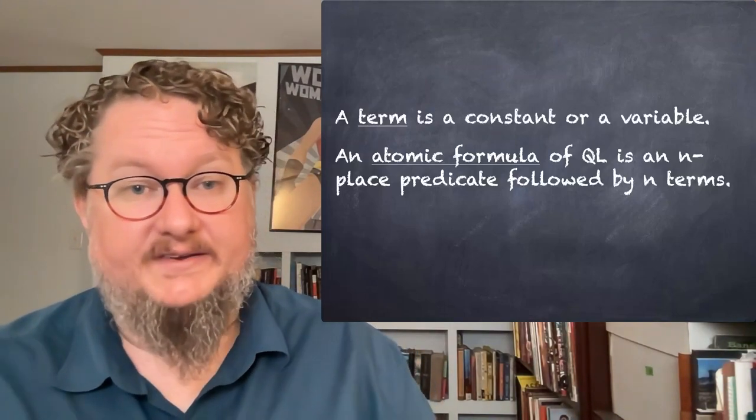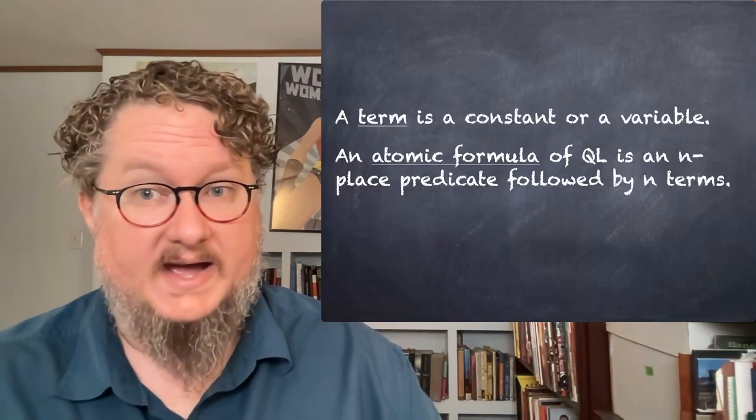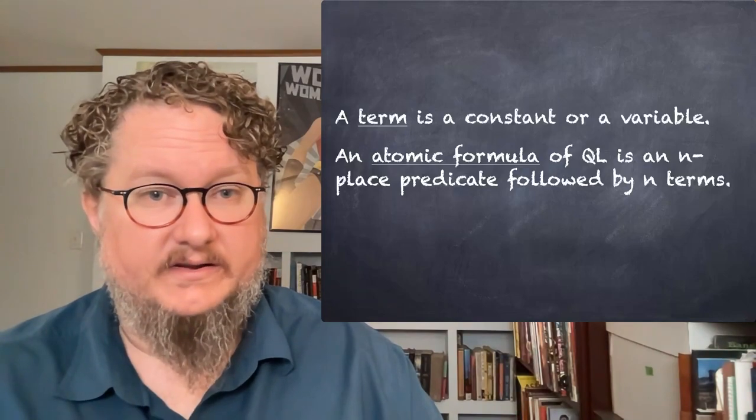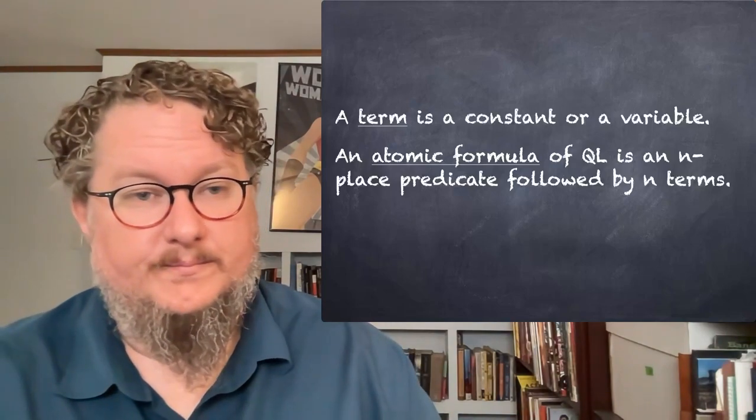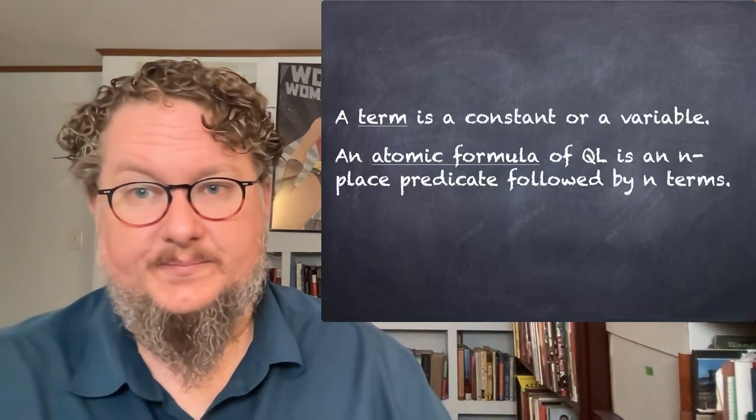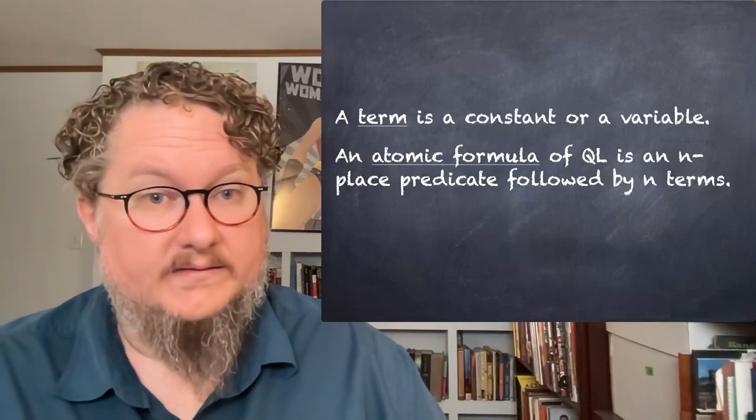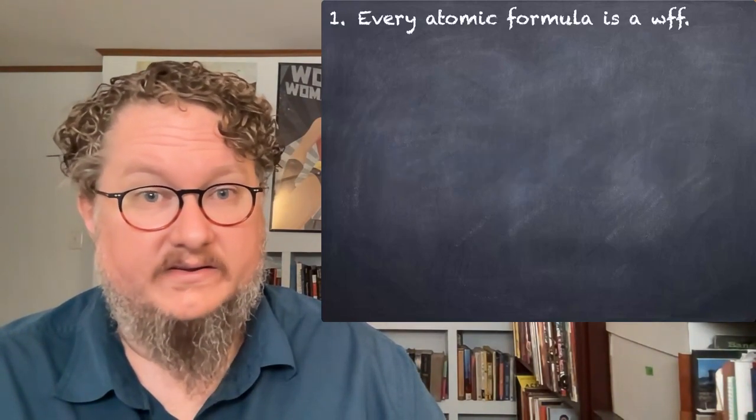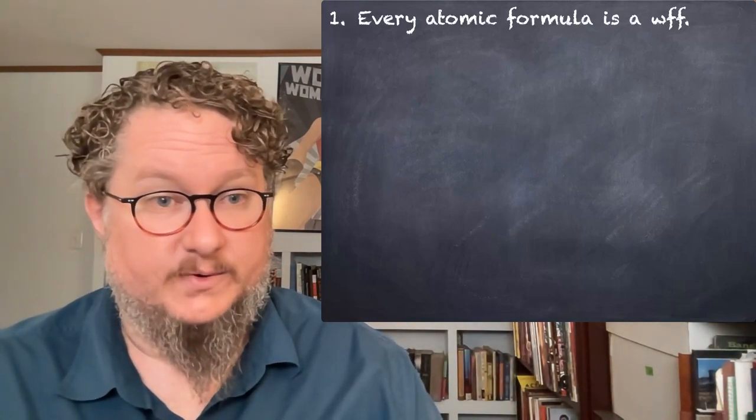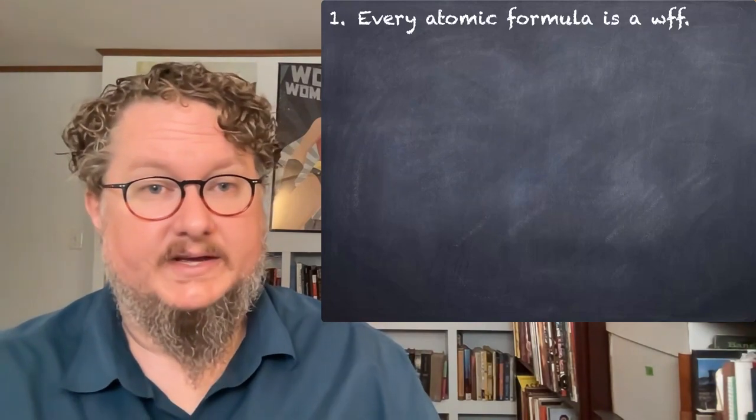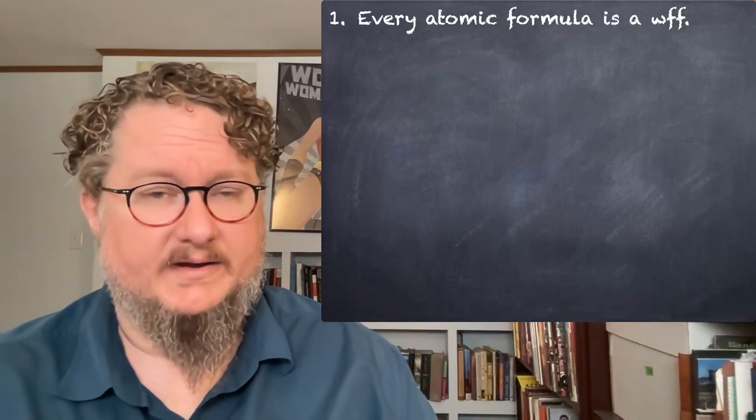And we'll say an atomic formula of QL is an n-place predicate followed by n terms. So one capital letter followed by one or more lowercase letters. And then we, like in SL, we define a well-formed formula with a series of rules. The first rule is that every atomic formula is a wff, is a well-formed formula. So every capital letter followed by lowercase letters is an atomic formula.